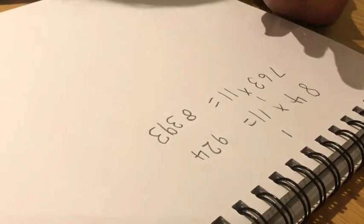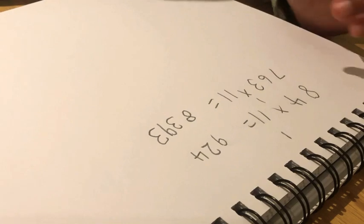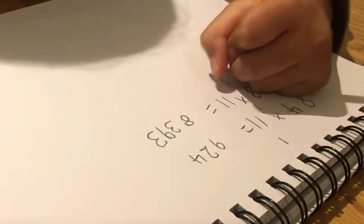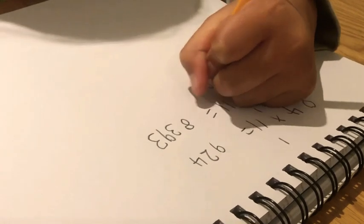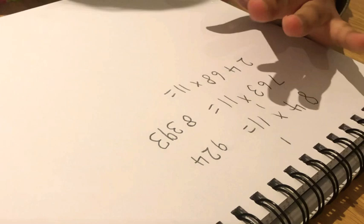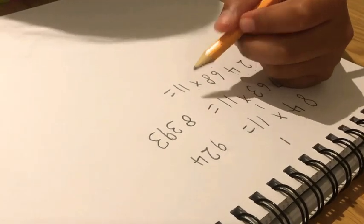And now for our last one, let's start with a four-digit number. 2468 times 11 equals. So again you have to follow the exact same pattern and ignore 11.